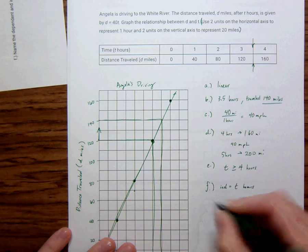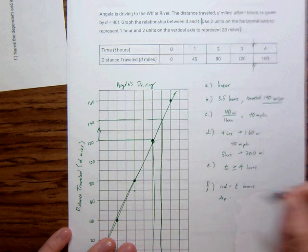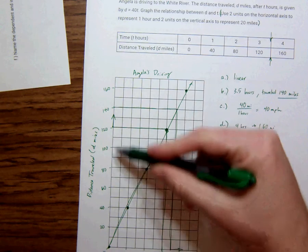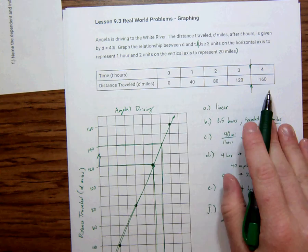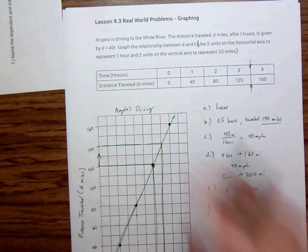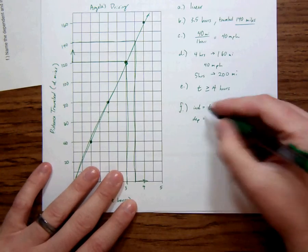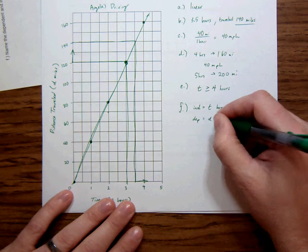Which leaves the dependent variable. It's always the vertical. It's always the bottom one, for our tables at least. And it's always the variable alone. So the dependent variable is going to be D miles.